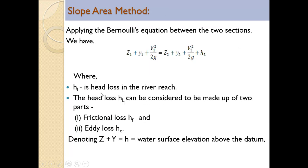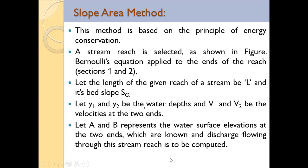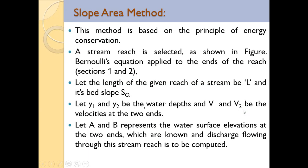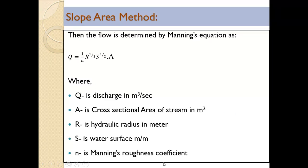Here hl is the head loss in the river, comprising head loss due to friction and head loss due to eddy. Since z + y equals the water surface elevation above the datum, z1 + y1 gives h1 (water surface elevation at section one) and z2 + y2 gives h2 (water surface elevation at section two).